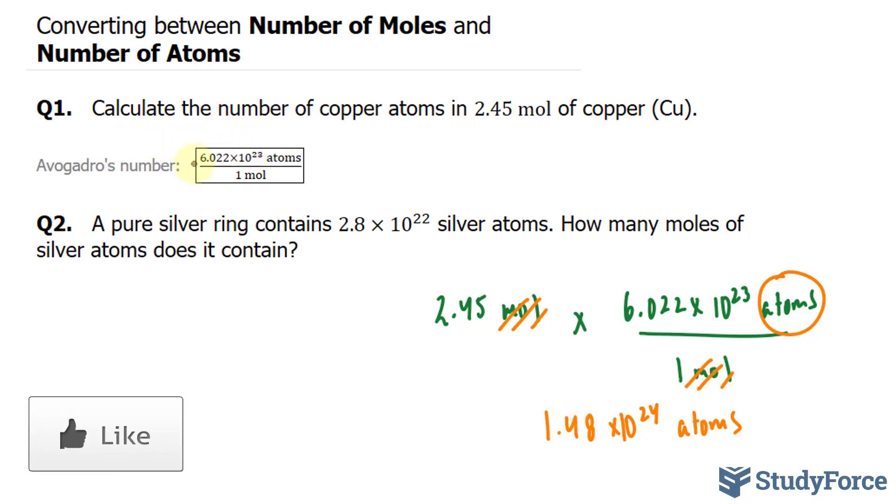Once again, we will use Avogadro's number. And this time, I will flip it so that the moles are at the top and atoms are at the bottom. Because if you do that, then the atoms unit cancel out.